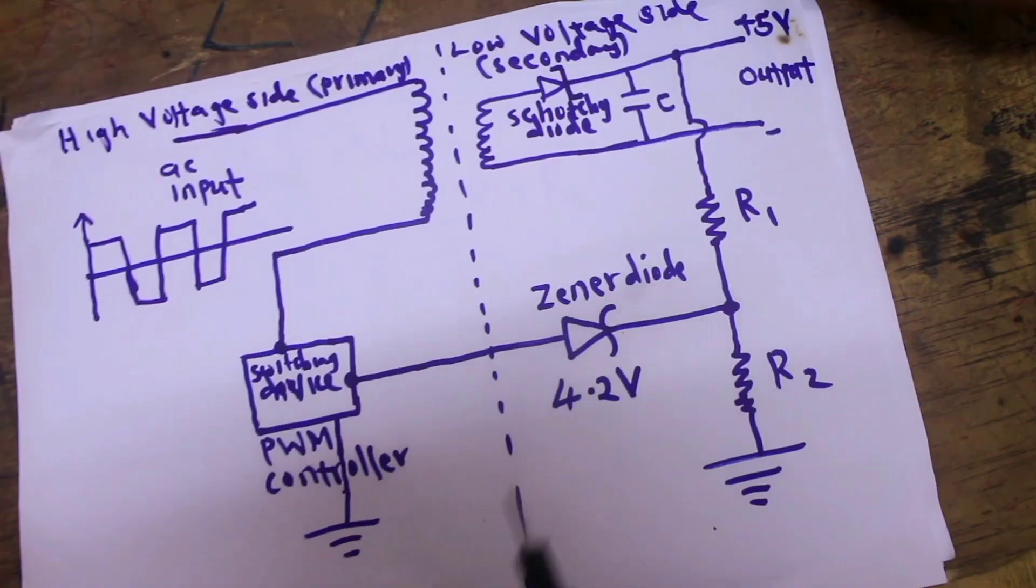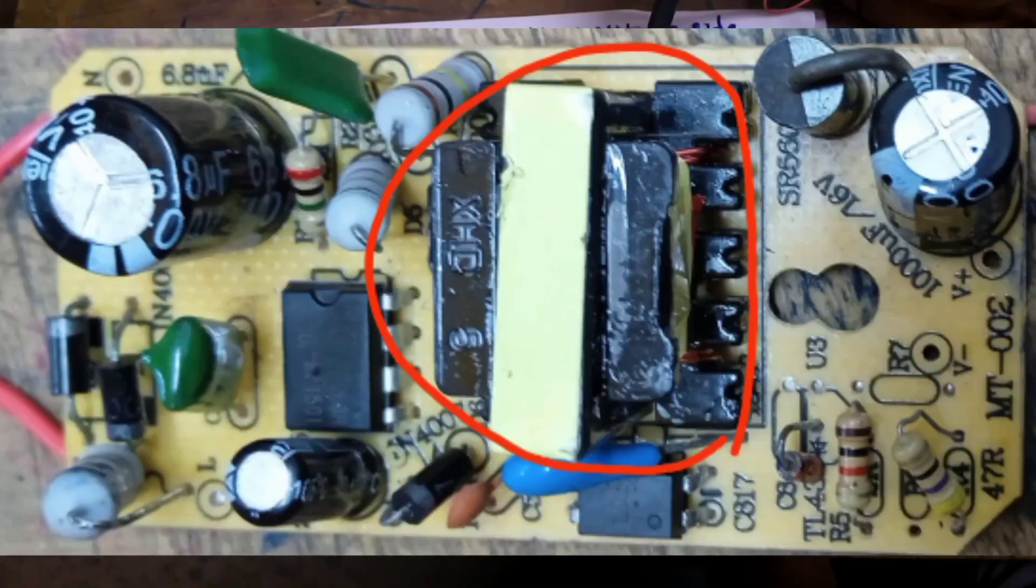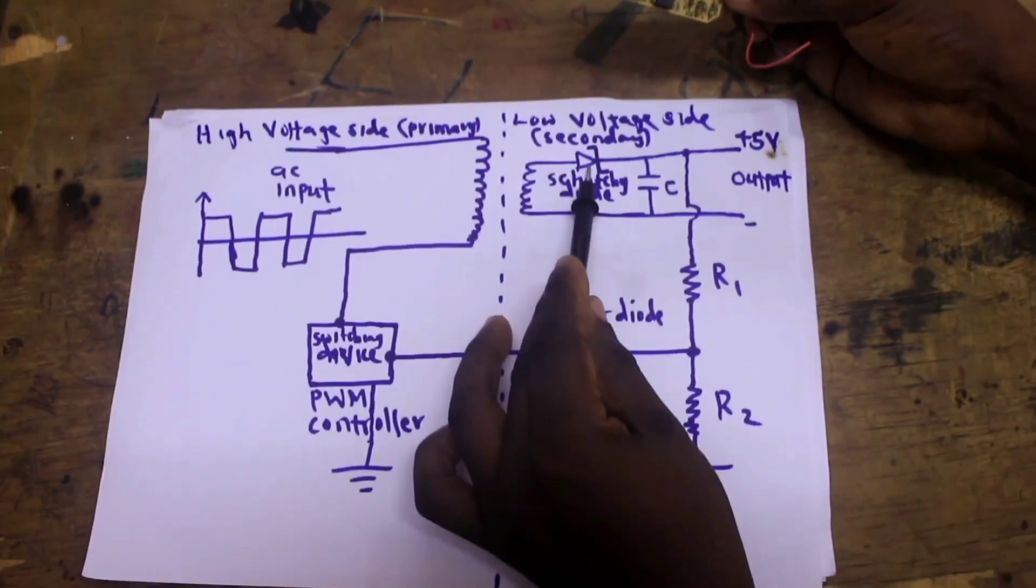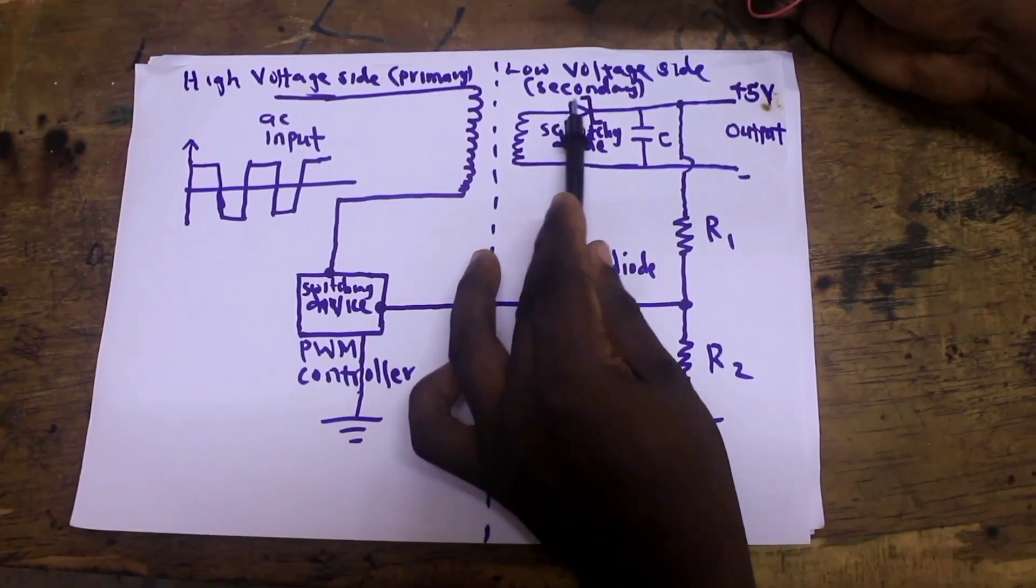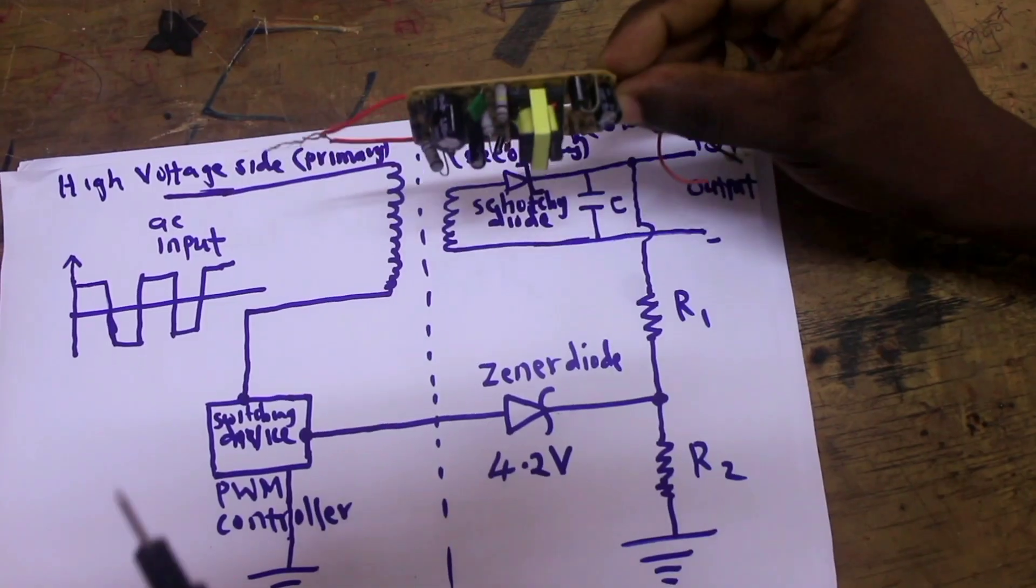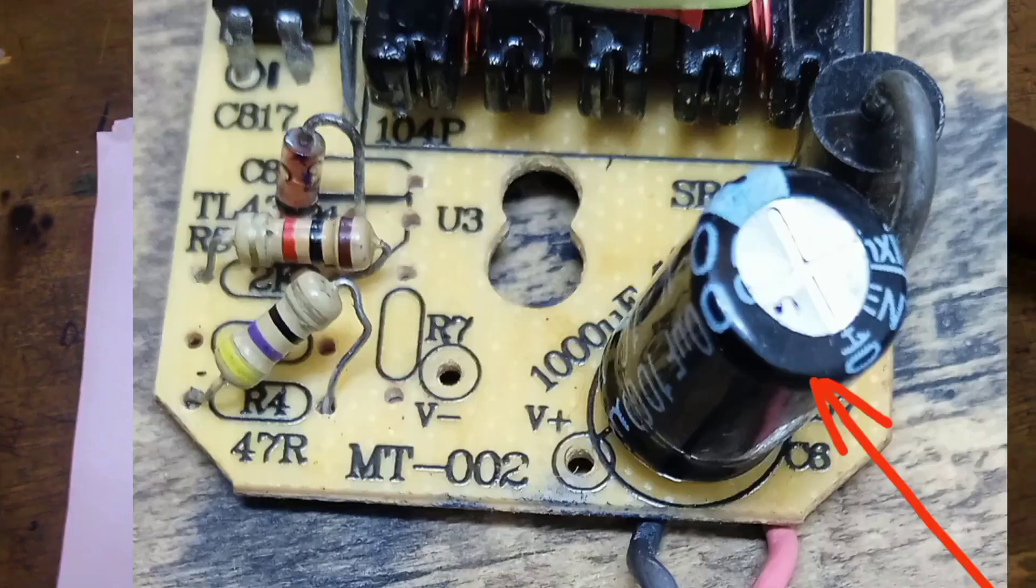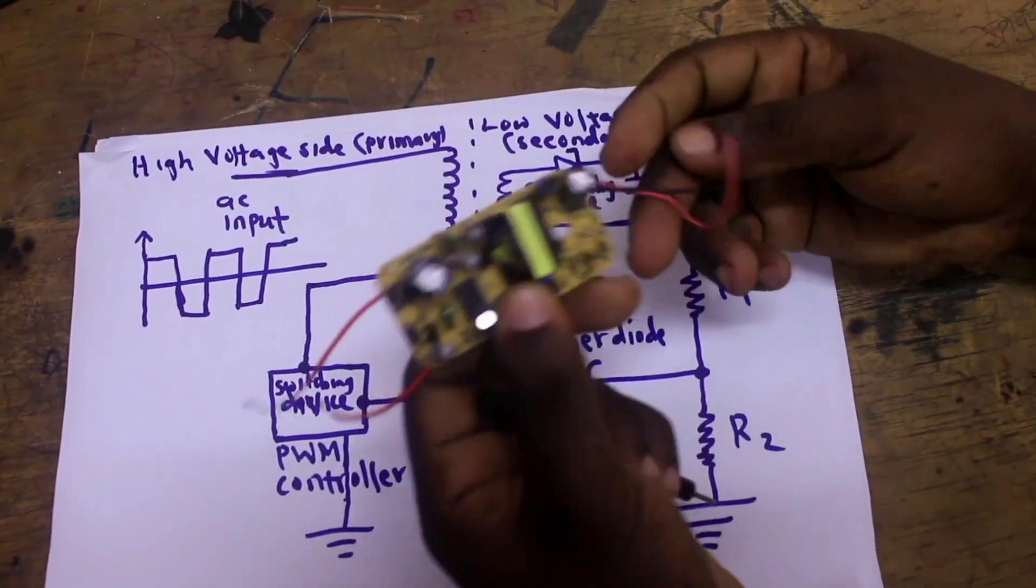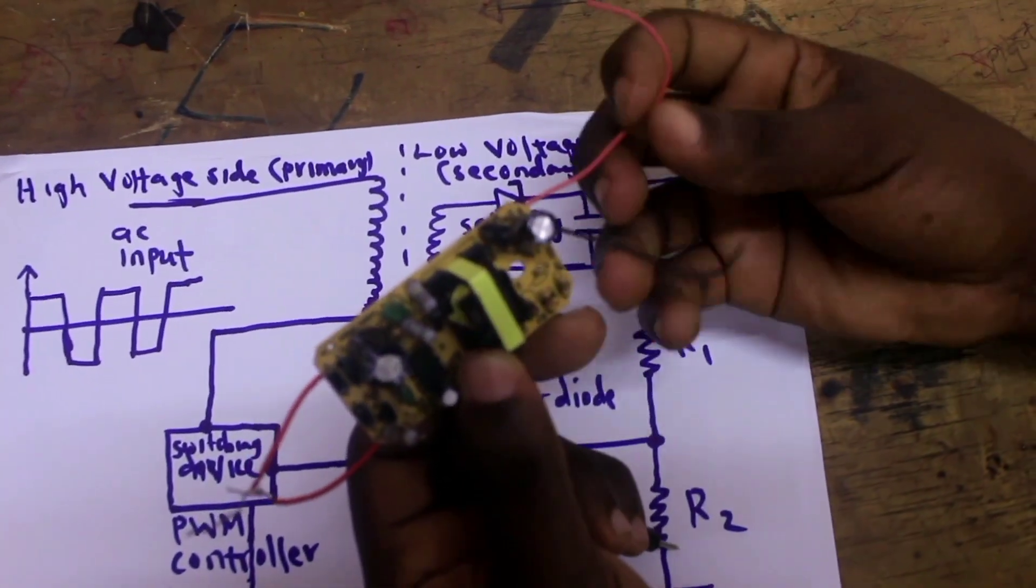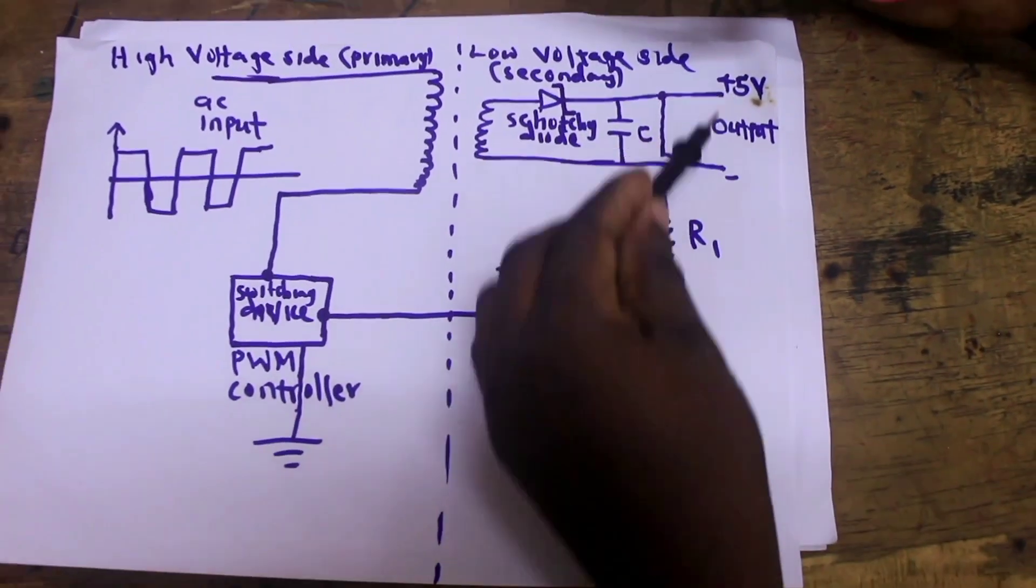You can see in my diagram here this is the transformer. This is the Schottky diode which is used to rectify the output of this transformer. This is the smoothing capacitor at the output and this is the output cables which is carrying 5 volts.